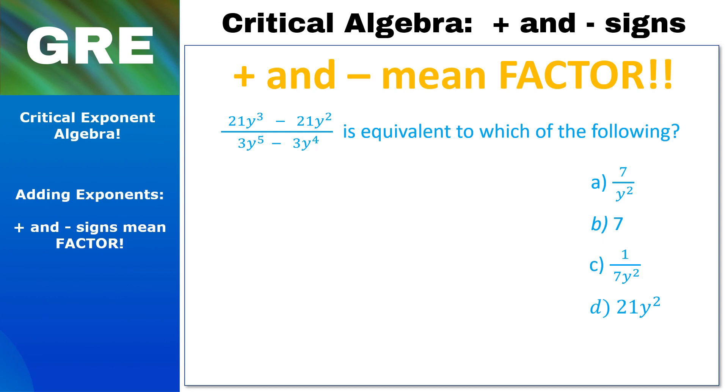Okay, so the first thing we do is we spot that minus sign which tells us to factor. So on the top, we have 21y² on each side of the minus sign, so we factor that out and put what's left over, y minus one, into the parentheses. Now on the bottom, we have another minus sign which is also telling us to factor. So we factor out the 3y⁴ and put what's left over, y minus one, into the parentheses.